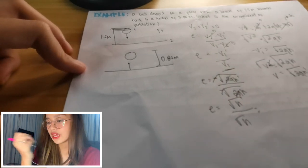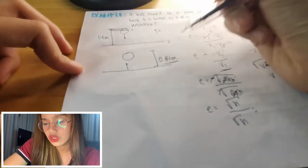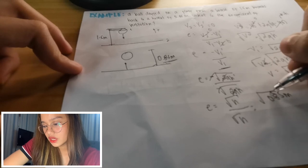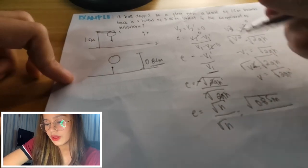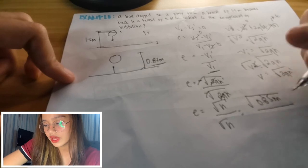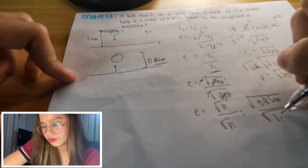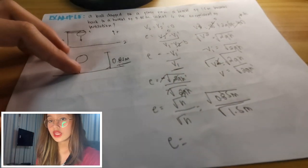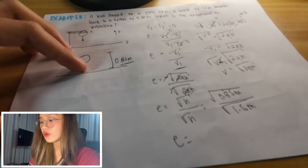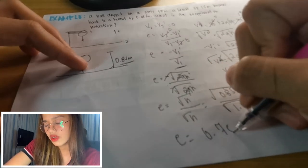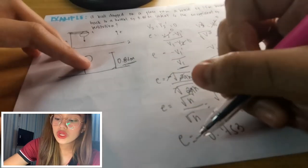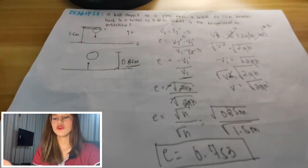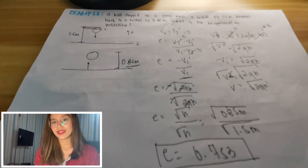So our h prime is equal to 0.85 meters. This is it. The final. So square root of 0.85 meters over square root of h which is 1.5. So our coefficient of restitution by calculating the values is equal to 0.753. So this is it guys. And the coefficient of restitution has no unit.